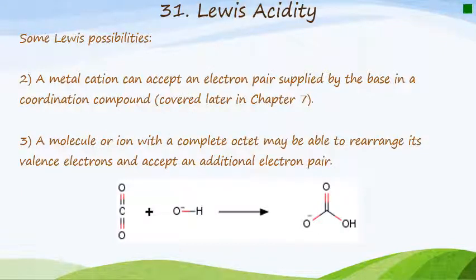The second possibility that we have is that a metal cation, particularly the transition elements, they can accept an electron pair supplied by the base in a coordination compound. Now we're going to look specifically at coordination chemistry later on in unit seven, which is chapter seven of the textbook. But the reason that this happened is because the transition elements have the d orbitals available, and some of those d orbitals may be empty, in which case an electron pair can go into the d orbitals to maybe complete an octet or just fill up one of the orbitals.